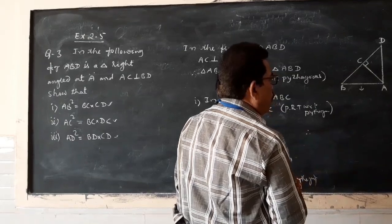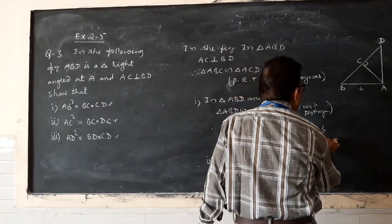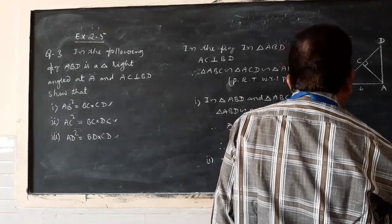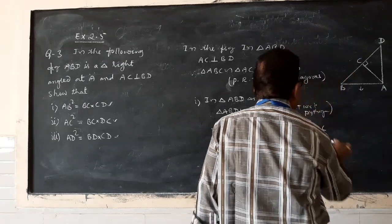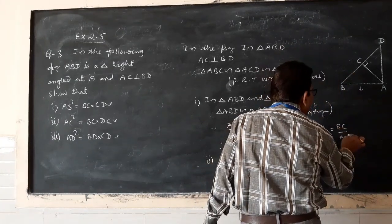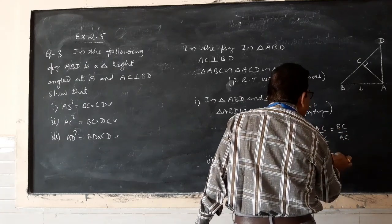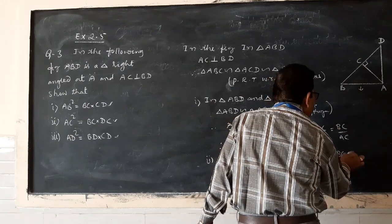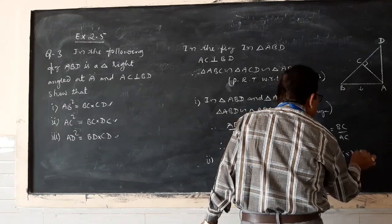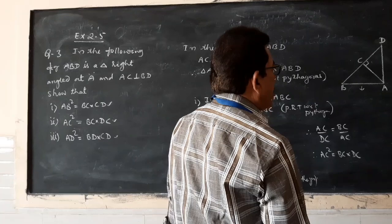In the second case, we have AC by DC equals BC by AC. Therefore, AC² = BC·CD. This is the second result.